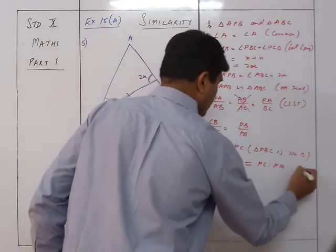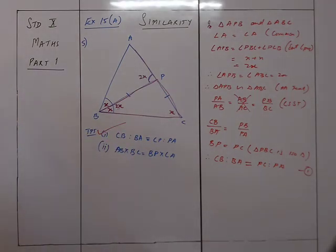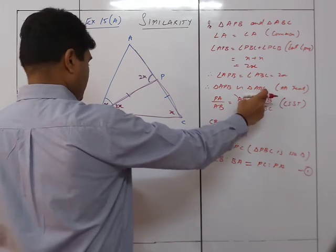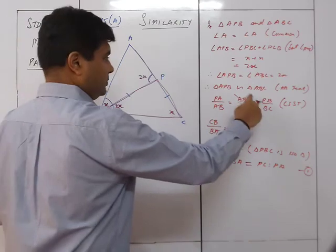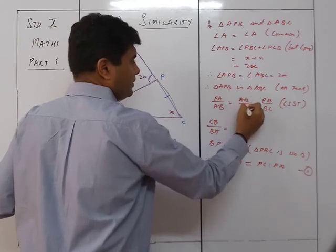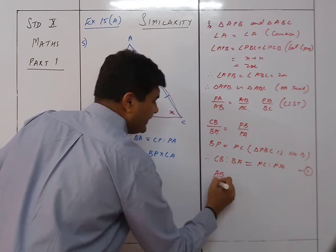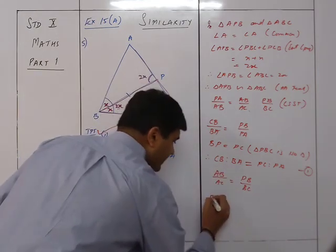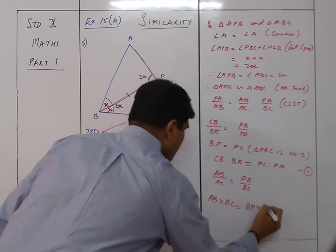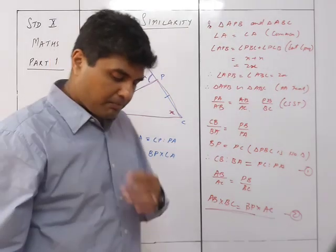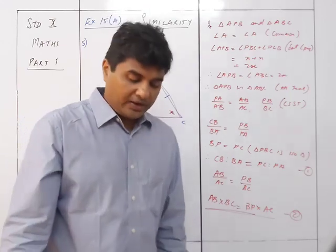For the second part, we need to prove AB × BC = PB × AC. Taking the ratio AB/AC = PB/BC from the CSST result and cross multiplying: AB × BC = PB × AC. Hence proved. That completes sum number 5 of Exercise 15A. We continue in the next video.